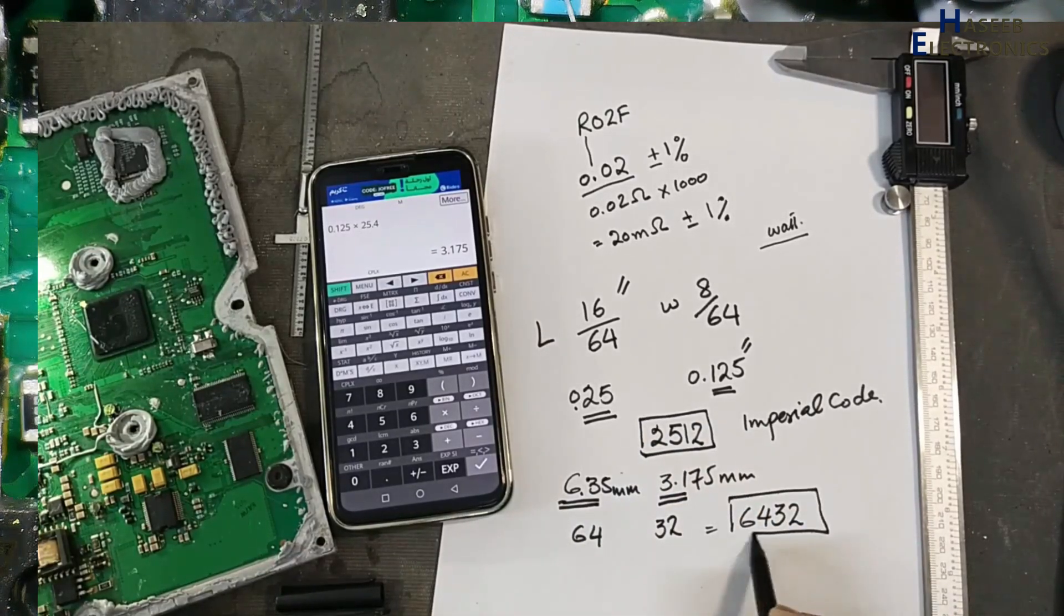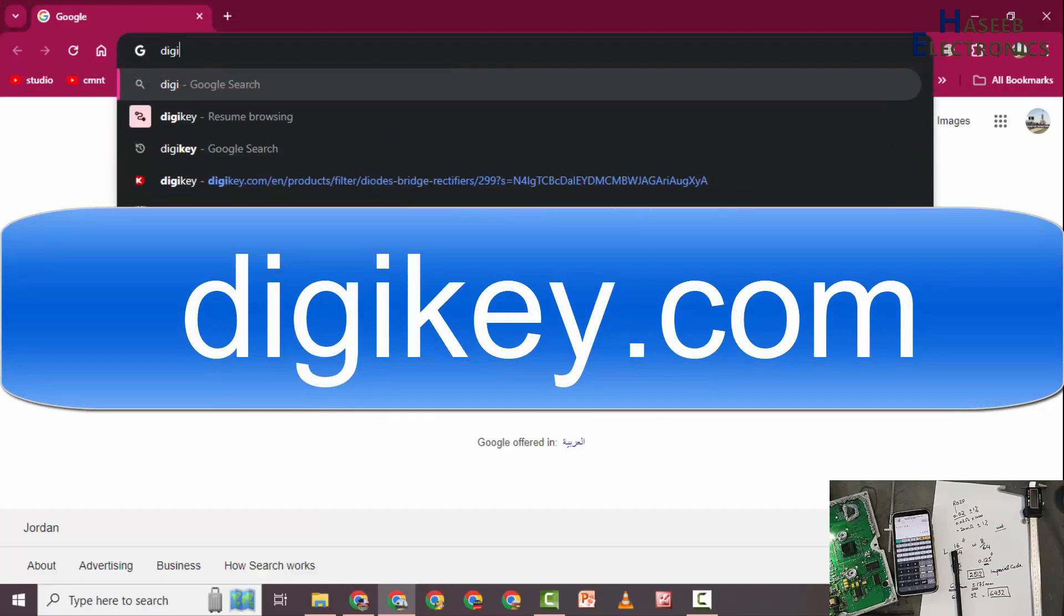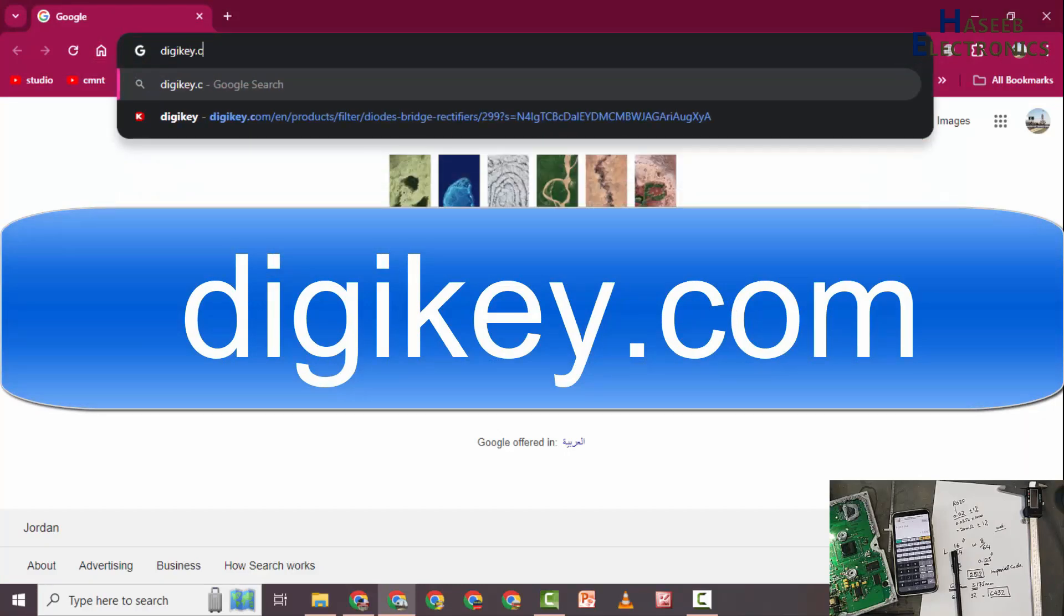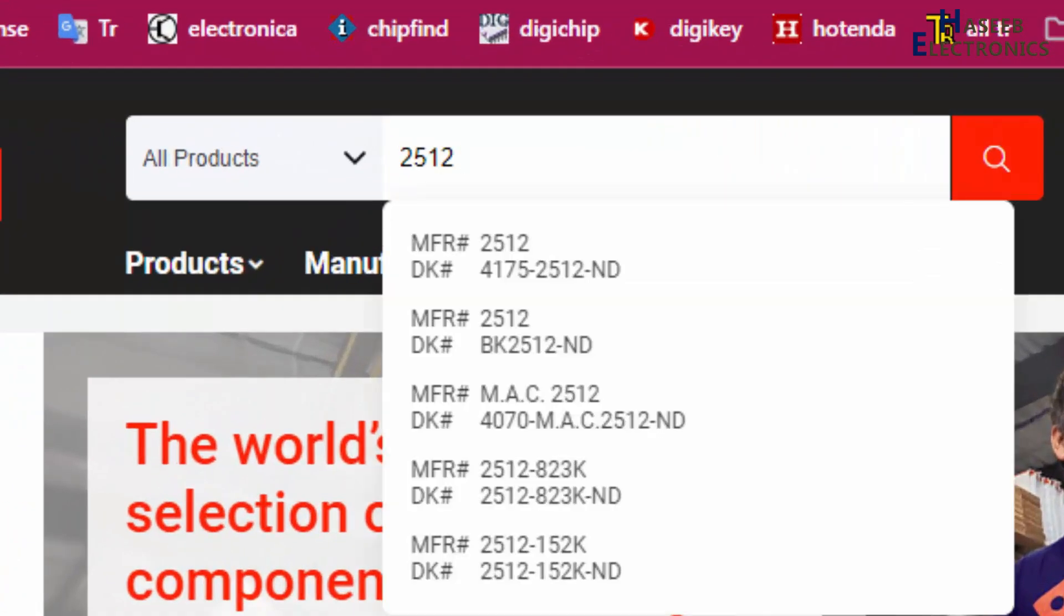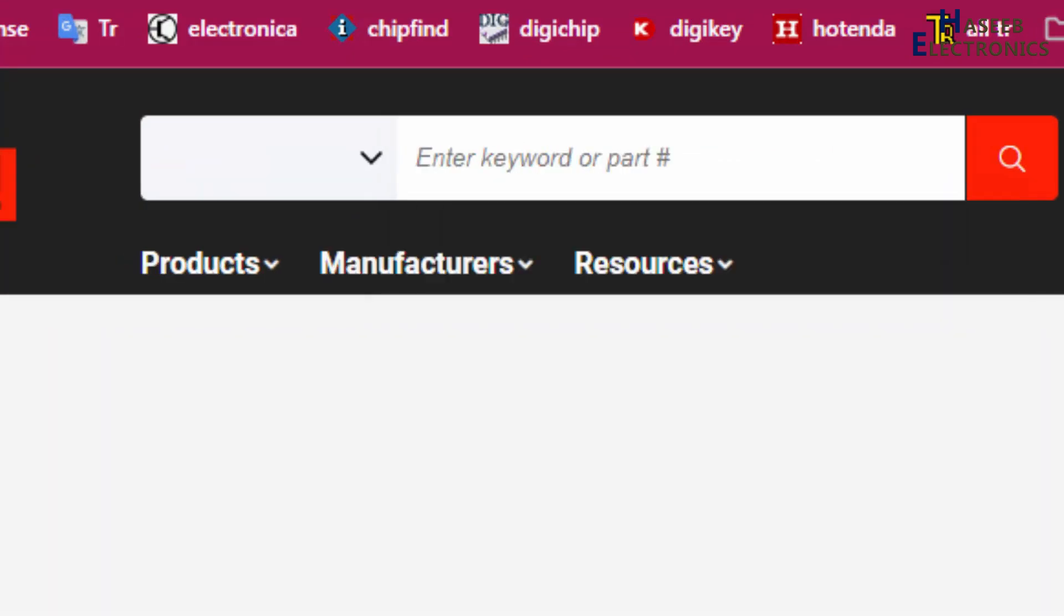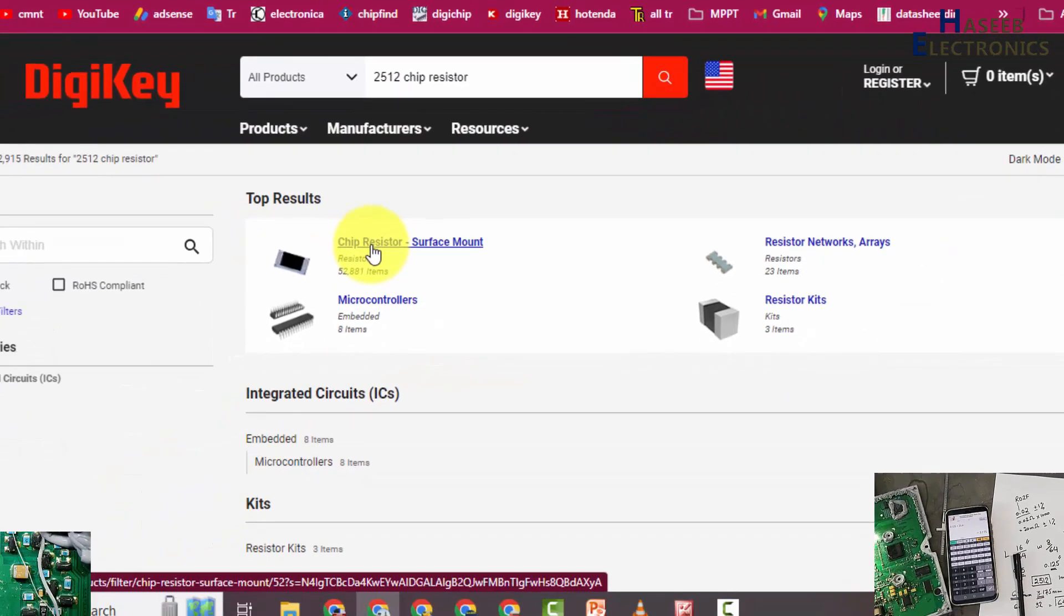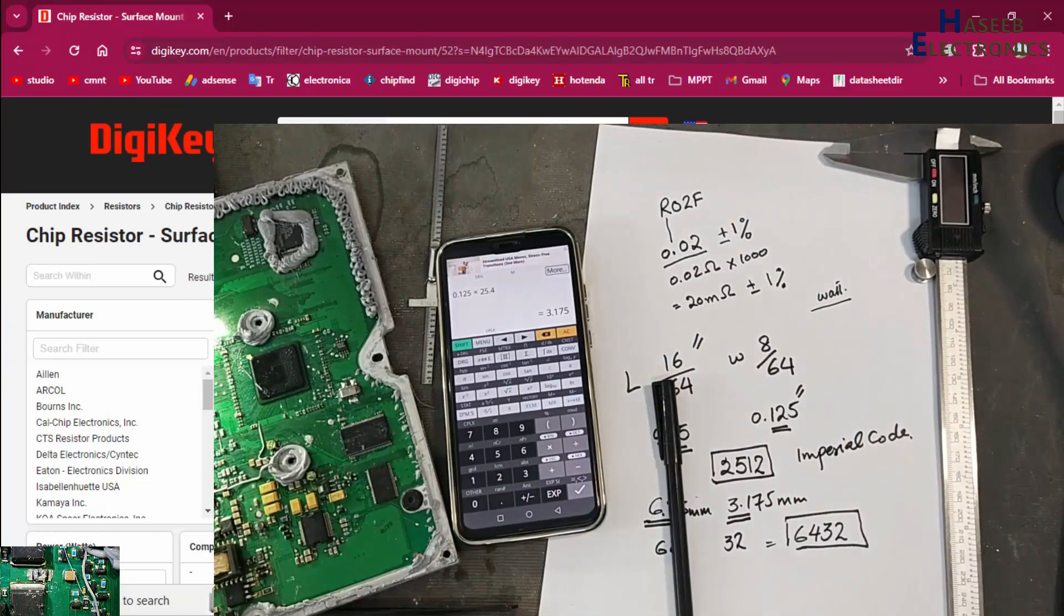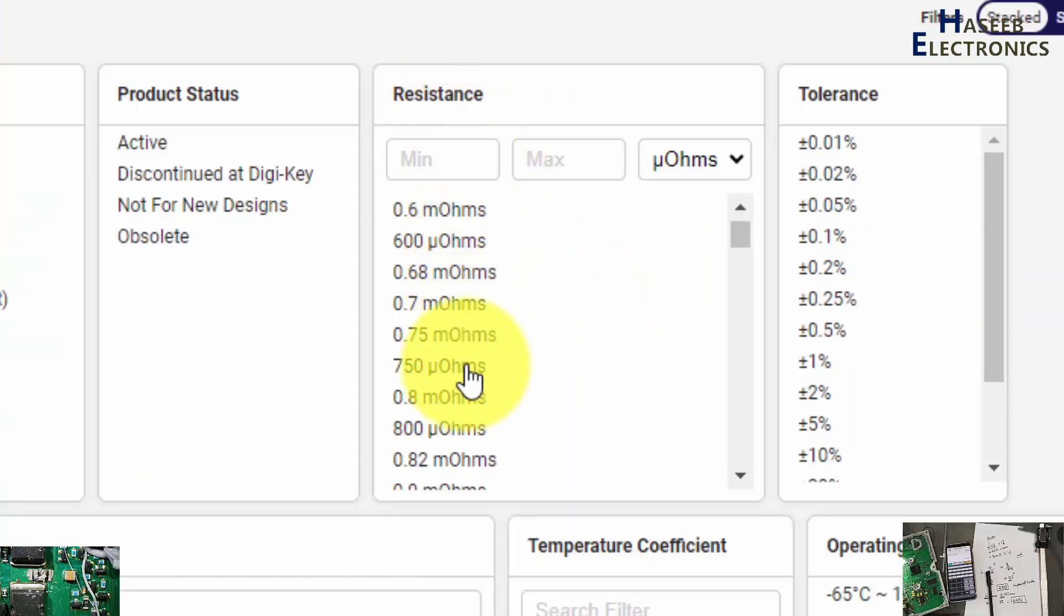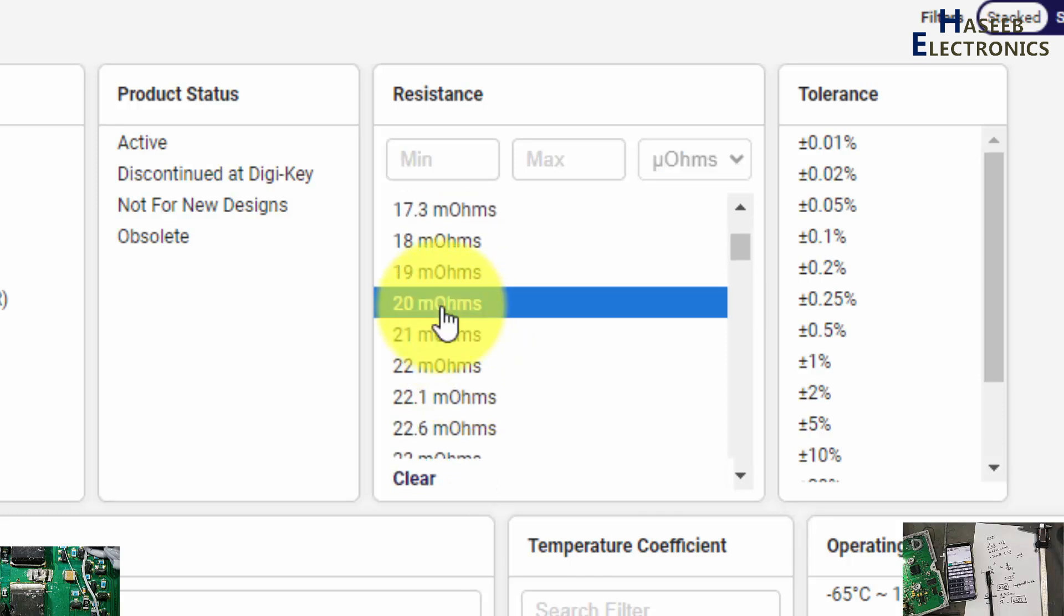This code and this code. Go to Digikey. 2512 chip resistor. The top here chip resistors SMD surface mount. Now this code, resistor is 20 milliohms. In the resistance we will consider 20 milliohms. Total is 1% because code is F.